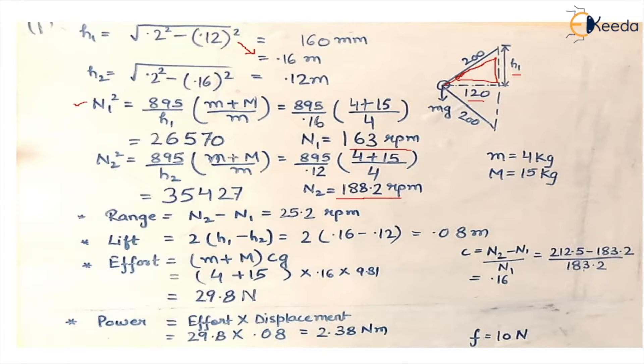Second thing that we have to calculate is lift. It means that when speed is changing from one value to another value, how much is the change in the height of governor. So lift is twice of h1 minus h2. You put the values in the formula and get the answer because we've already calculated h1 and h2.